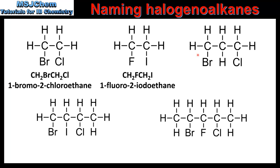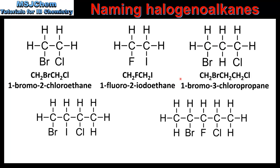In our next example we have 3 carbon atoms in the longest chain with one carbon atom bonded to a bromine atom and another bonded to a chlorine atom. Numbering starts from carbon number 1, then carbon number 2, then carbon number 3. Therefore this compound is named 1-bromo-3-chloropropane.